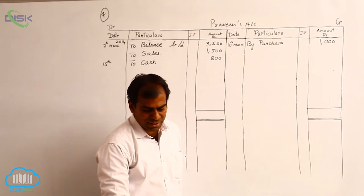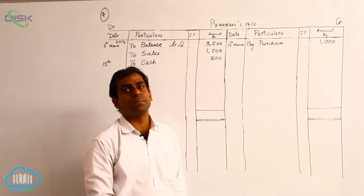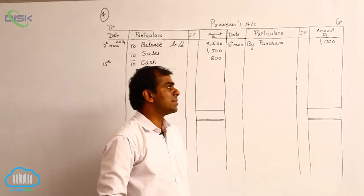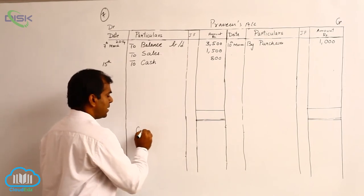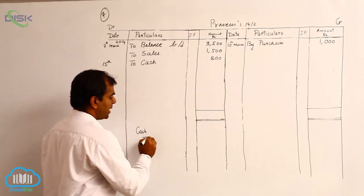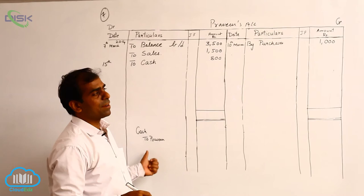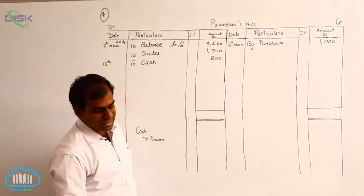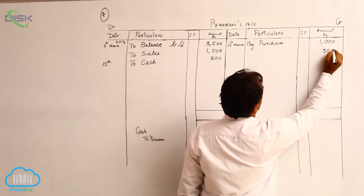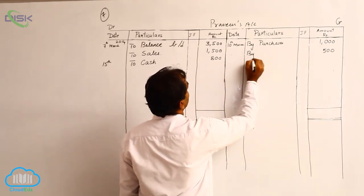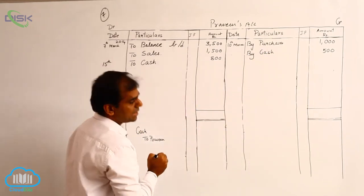The next transaction is on 23rd — received cash from Praveen, 500 rupees. When Praveen gives us cash, the journal entry would be cash account debit to Praveen's account, and we are crediting Praveen's account. So we enter 500 on the credit side of Praveen's account, reason being cash. This is on 23rd.